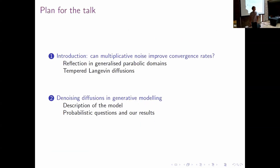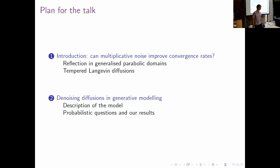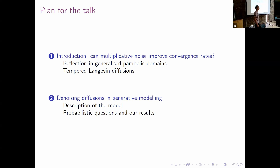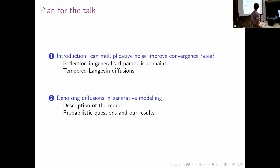The structure of this presentation: we will start with reflecting diffusions in generalized parabolic domains, follow up with some results on tempered Langevin diffusions, and use those to introduce the problem and the effect of multiplicative noise on convergence. In the second part of the talk, we'll discuss diffusion models in generative modeling, describe the model, introduce some probabilistic questions, and try to show results using the intuition built in part one.